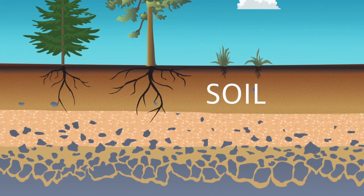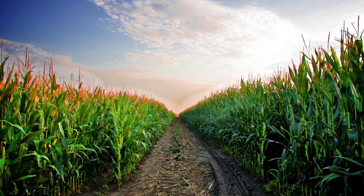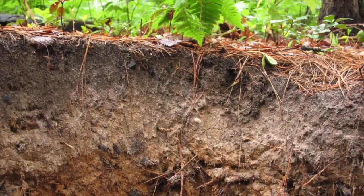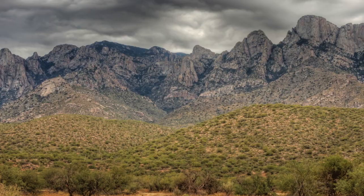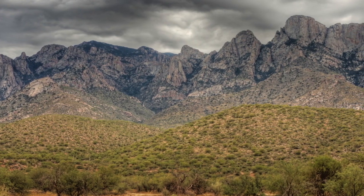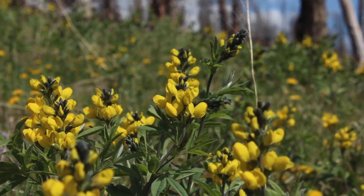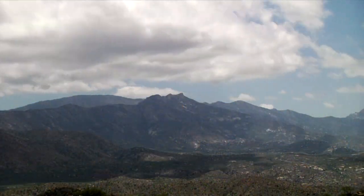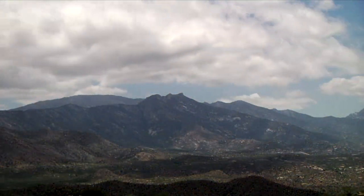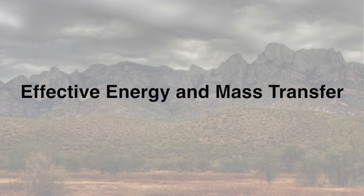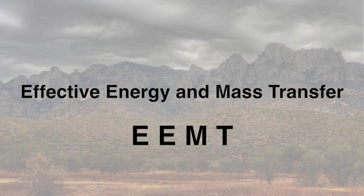Soil is vital for life on Earth. All the food we eat starts as plants that grow in soil. But how does soil form? How does nature transform bits of rock and sand into something that sustains life? The answer to those questions may be found in an equation that soil scientists call effective energy and mass transfer, or EEMT for short. Let's figure out what that means.